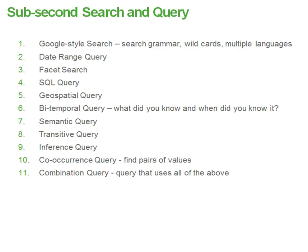That common canonical model is very useful when it comes to the sub-second search and query capabilities that it offers. This list of 11 items is an example. We could talk about Google-style search and query, the date range query we're all familiar with,